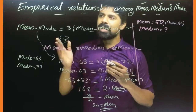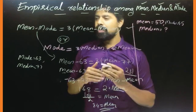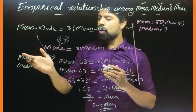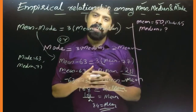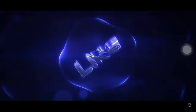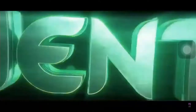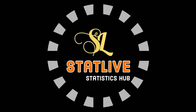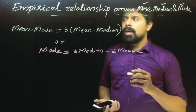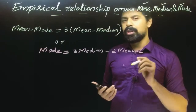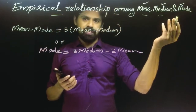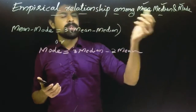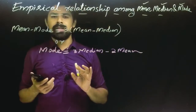In this lesson, we are going to learn about the Empirical Relationship Among Mean, Median, and Mode. We have an example where Mode is 63 and Median is 77. We are going to learn about the Mean and the formula. Mean, Median, and Mode have a relationship with each other.